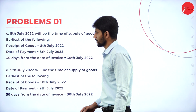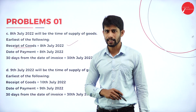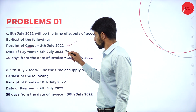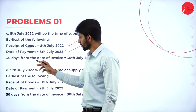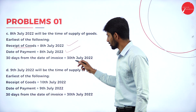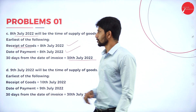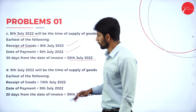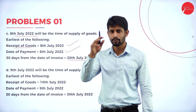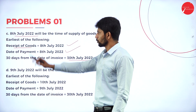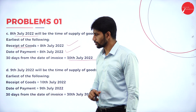Moving on to Case C: receipt of goods is 8th July and the date of payment is also the same date, 8th July. 30 days from the date of invoice is 30th July. In these three dates, which is the earliest? Obviously 8th July 2022. You can take receipt of goods or date of payment as the earliest date because both are the same. So 8th July 2022 will be the time of supply of goods.